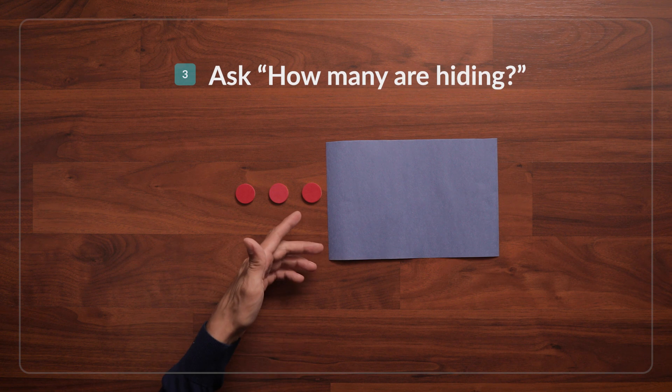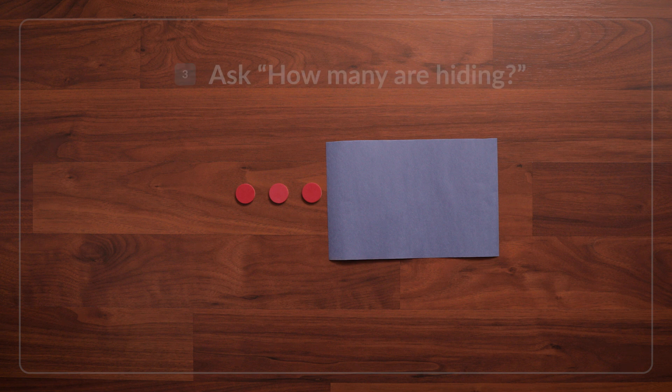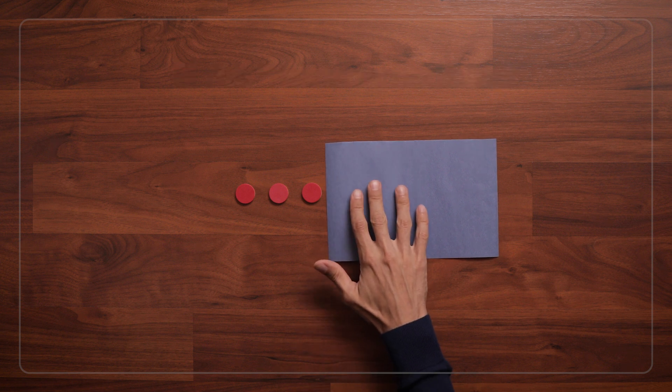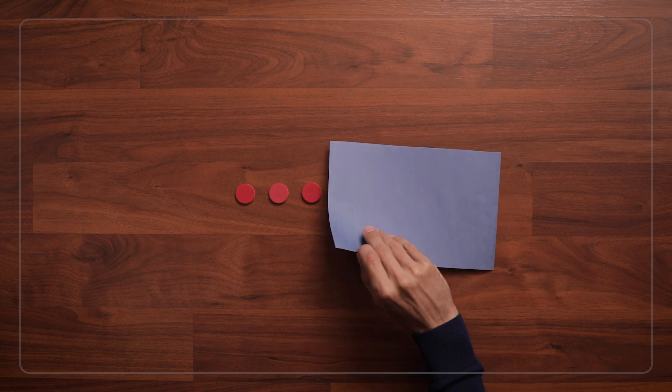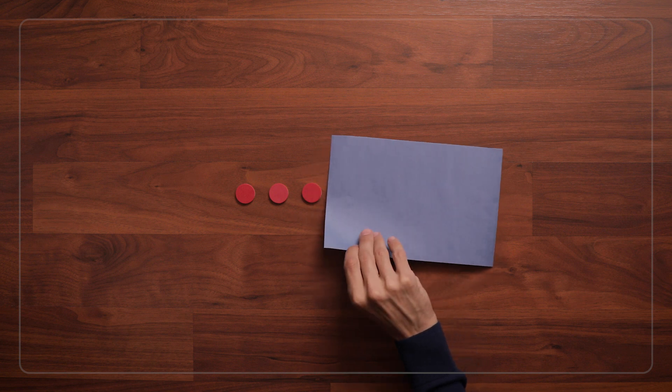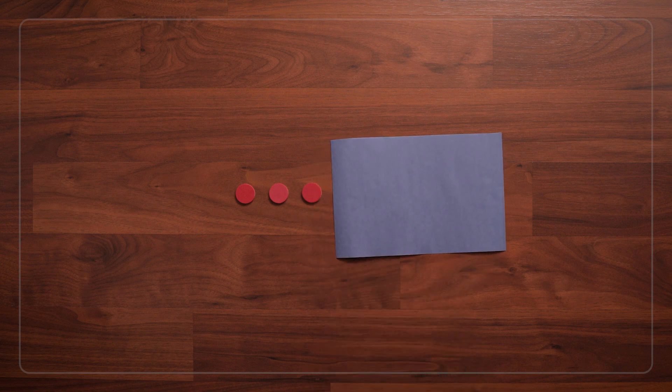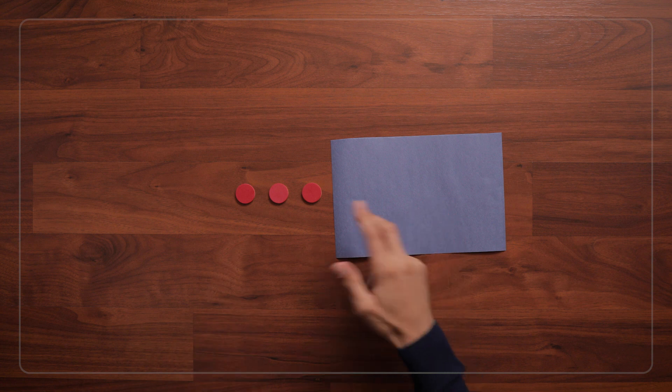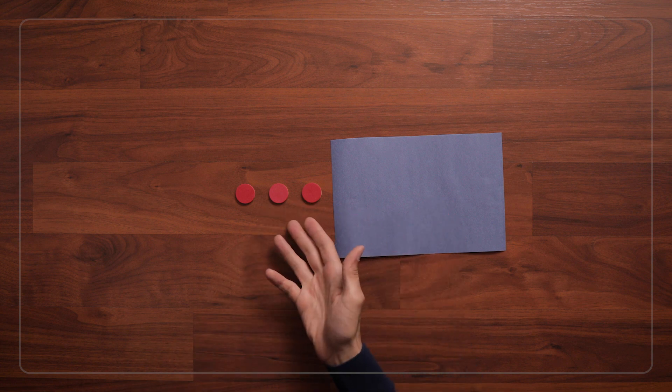Okay, now can you tell me how many are hiding? And to find out, sometimes kids will feel the hidden counters through the cloth and sometimes they'll peek. And sometimes they'll just know immediately that there were five counters, and now there are only three visible. So there must be two hiding.